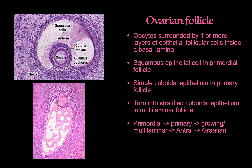Inside the follicle is the oocyte, surrounded by one or two layers of epithelial follicular cells, lying on a basal lamina. Squamous epithelial cells line the primordial follicles, maturing into simple cuboidal cells in the primary follicle, and then into stratified cuboidal epithelium in the multi-laminar follicle. The progression goes: primordial → primary → growing/multi-laminar → antral → mature Graafian follicle.